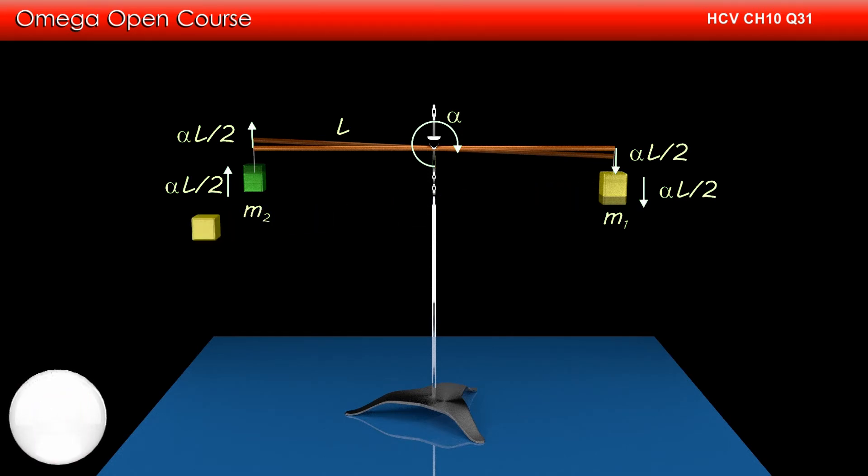Now, let us draw the free body diagram of m1. Gravitational force of m1g will act in the vertically downward direction. If we assume the tension in the string joining the block to the rod to be t1, then t1 will act on it in the upward direction. The block will move downward with acceleration alpha l by 2. From the FBD, we have m1g minus t1 equals m1 times alpha l by 2.